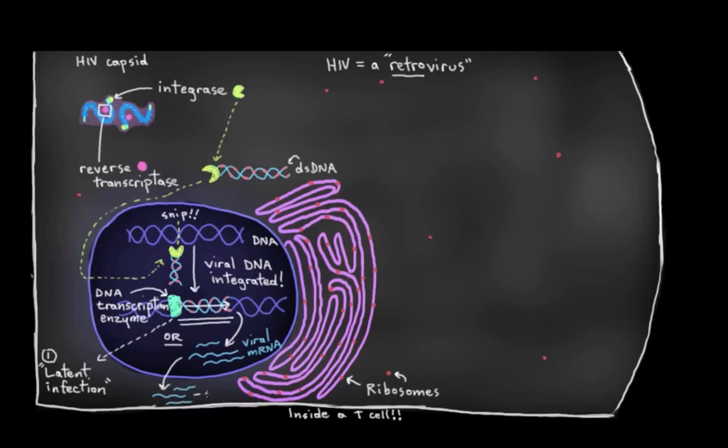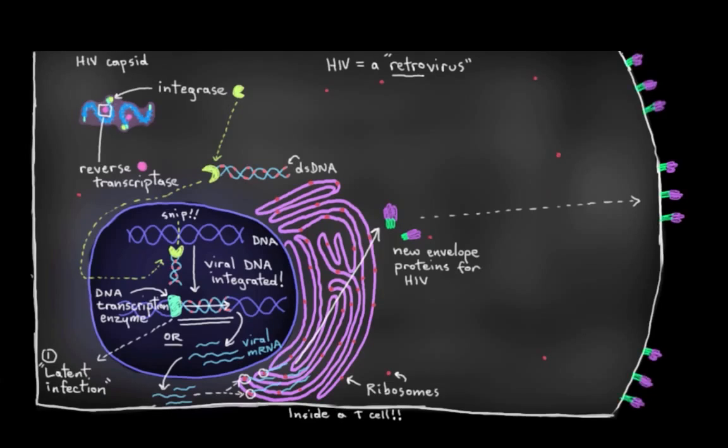They find some ribosomes, say on the rough endoplasmic reticulum and they start to use the ribosomes to make proteins like new envelope proteins, for example. These envelope proteins will then make their way through our endoplasmic reticulum, head up toward the cell surface, right? Our cell membrane. And once enough get up there, they start to coalesce a bit. They cluster together. And this is actually happening in a lot of other places on our cell membrane. So, you can see all the new GP120 proteins here on the surface of these viral envelope segments.